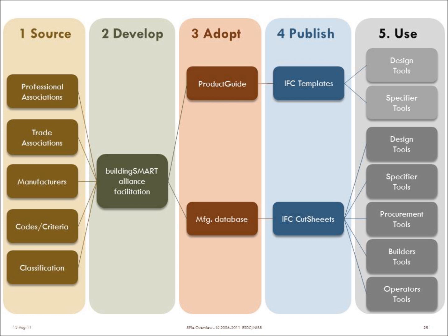As these groups reach consensus over time, that consensus is published through the product guide, and adoption is then mapped into manufacturers' databases. The product guide will publish the IFC product type templates, and manufacturers' databases then publish the product templates — maybe even with a name like 'IFC cut sheet,' since we already have PDF cut sheets. The generic product type templates are used in design and specification tools, and the IFC cut sheets are used in tools to help designers select products, specifiers define details, procurement tools, builders' tools, and operators' tools to make sure products can be maintained over time.